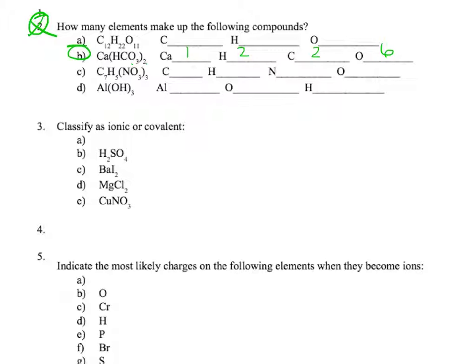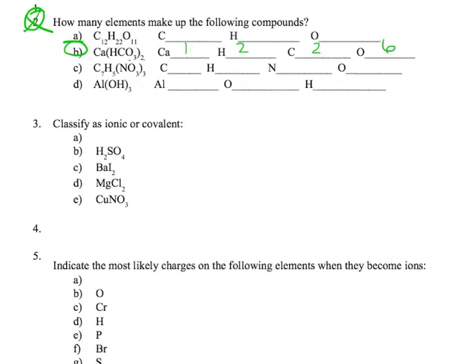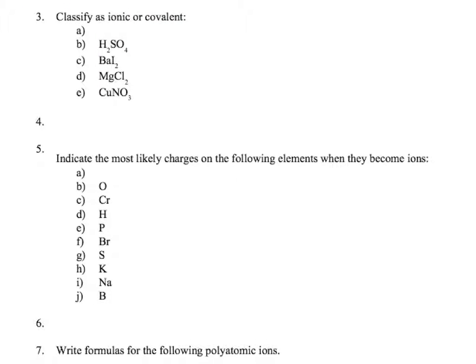So your numbers there should be 1, 2, 2, and 6, and that process will hold true for each of those problems and for any chemical that you would come into contact with. Moving down to number two, or your number two, number three on here, classify these as ionic or covalent. We'll start with A, or for you it's A, for me it's B.